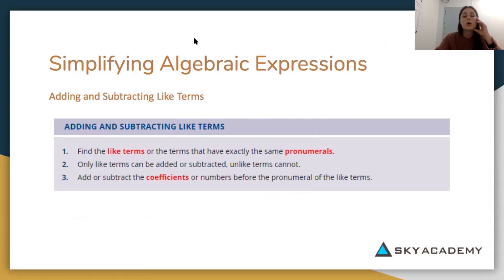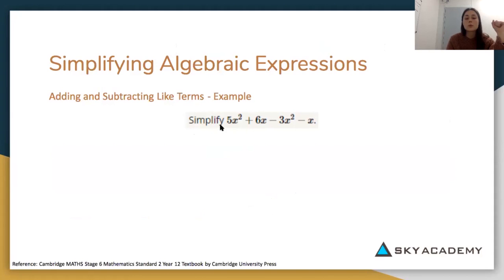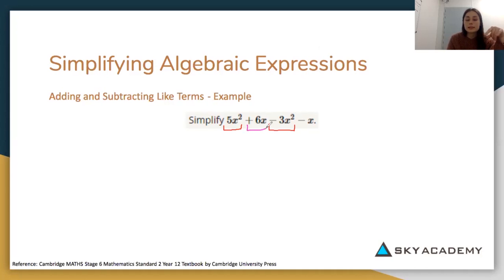Let's have a go at another example. We have the algebraic expression 5x squared plus 6x minus 3x squared minus x. I'm going to highlight our like terms in groups. We have 5x squared as one group, and the other x squared term is minus 3x squared. Then we have 6x minus x as another group.